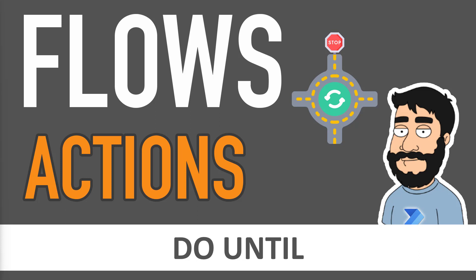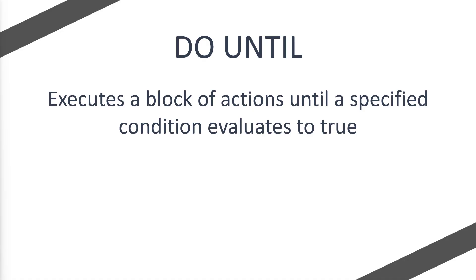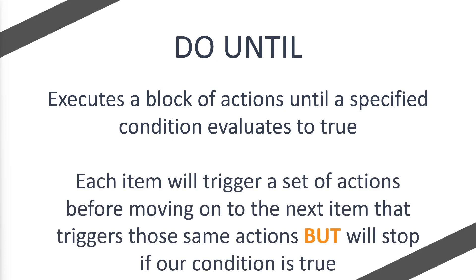Today we're going to be looking at the Power Automate flow action: Do Until. So what does Microsoft say Do Until does? Well, Do Until executes a block of actions until a specified condition evaluates to true. Each item will trigger a set of actions before moving on to the next item that will trigger those same set of actions.